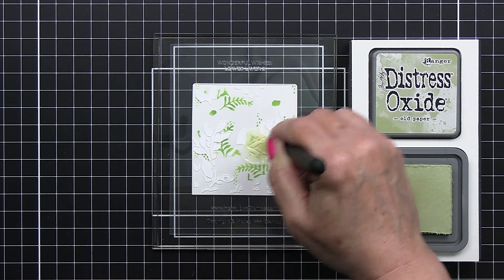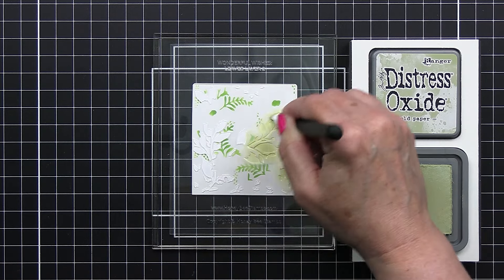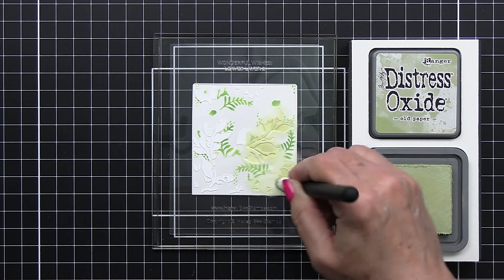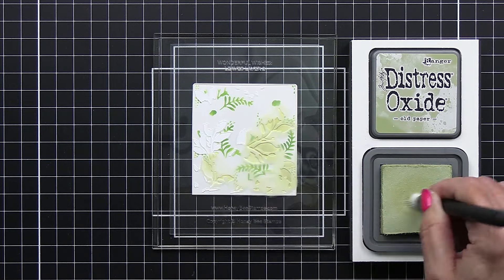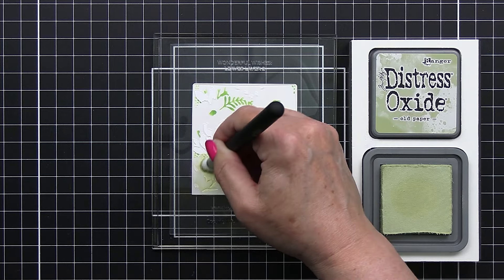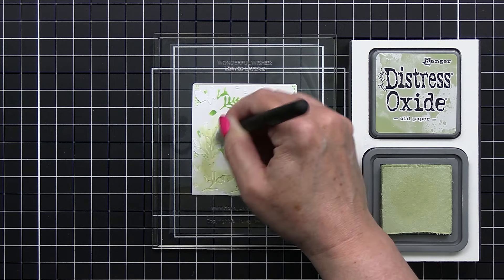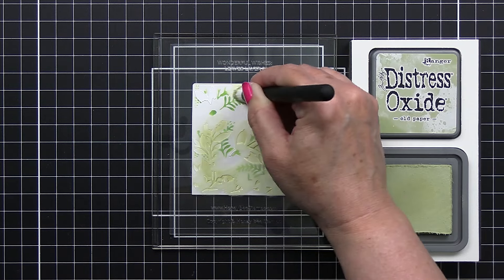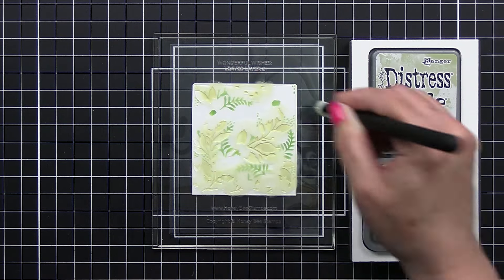Now I'm going in with some Old Paper and I'm going to add just kind of more of a muted green layer of leaves. So this is the second stencil for the leafery and you can see here I'm using again one of the Honey Bee detail blending brushes and I'm just pouncing and rubbing the ink into those leaf areas.